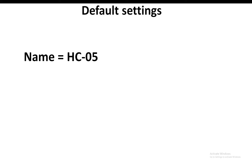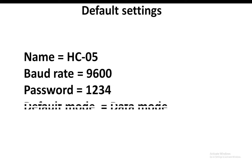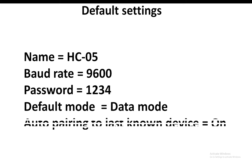By default, the HC05 settings are: name is HC05, baud rate is 9600, password is 1234, and the default mode is data mode. We have two modes: command mode and data mode. Data mode is the normal operation mode, while command mode is the one in which we can change the settings — device name, baud rate, password, and so on. There is also an auto-pairing option to the last known device.